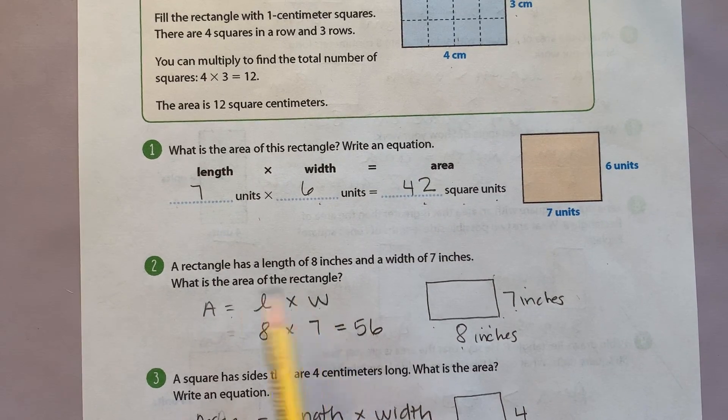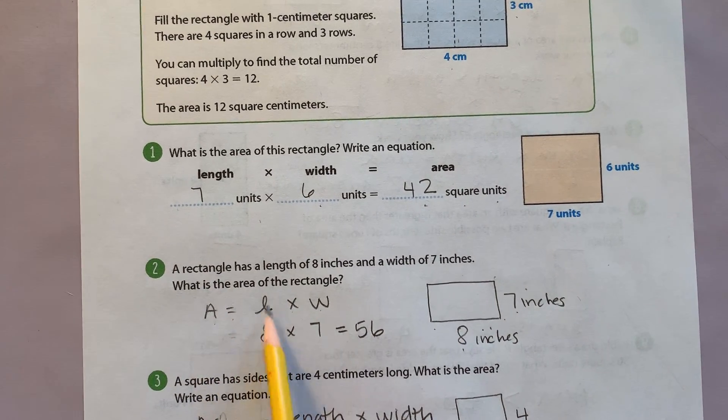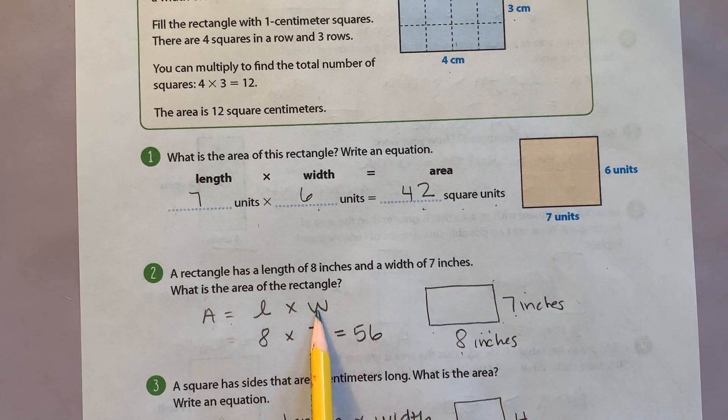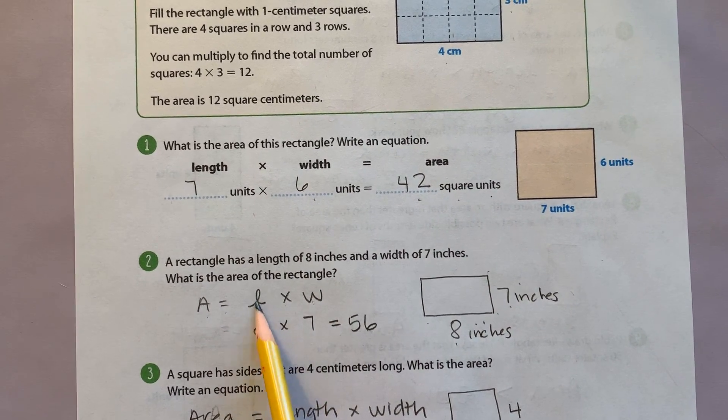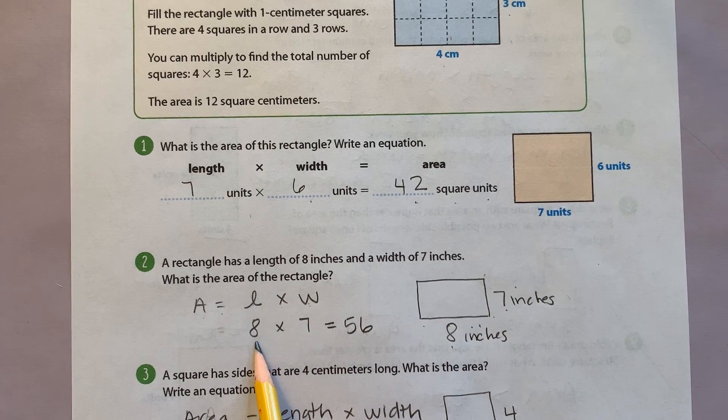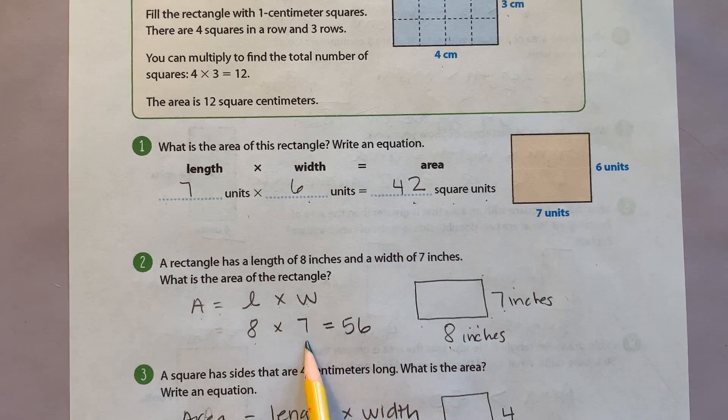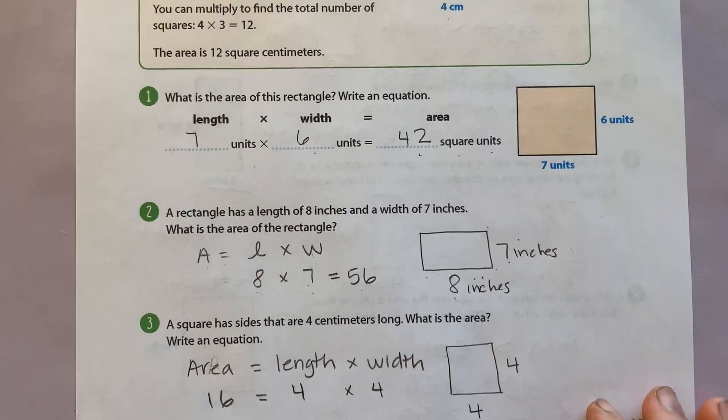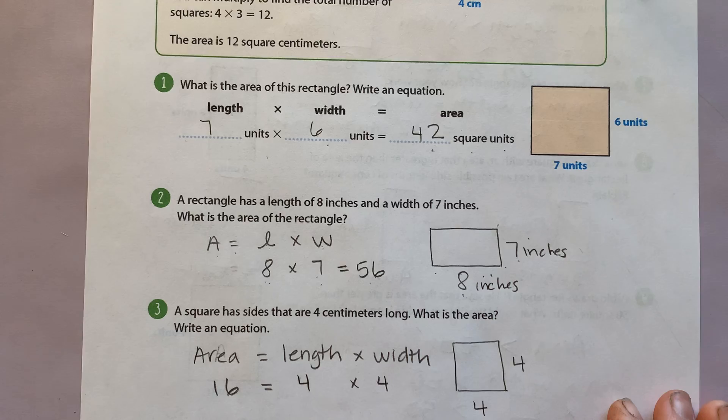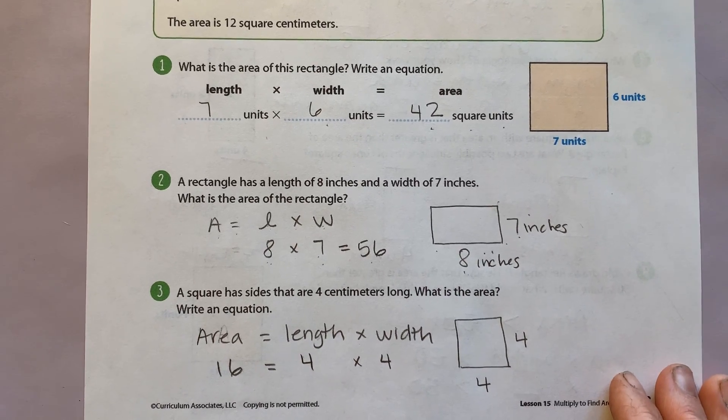And as a big kid, I can use A for area, L for length, and W for width. We're getting you ready for fourth grade. So my length is 8, so I substitute that in. My width is 7, so I substitute that in. And 8 times 7 is 56. Remember to work on those multiplication facts if you need to. You'll need those for fourth grade.